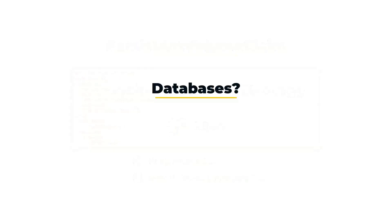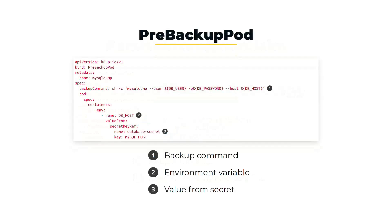But what about the database? Given how databases work, we cannot just backup the database's files, because we run the risk of data corruption. Instead, it is much better to store the output of the MySQL dump command. For this reason, we need an object of type pre-backup pod. This object is part of the custom resource definitions installed by the KDAB operator. A pre-backup pod runs, as the name implies, before a backup runs. It stores the output of any command writing to the console, making it a very flexible mechanism, ready to store the data of any application running on your cluster. The command used by KDAB is specified in the spec.backup command field of our YAML.